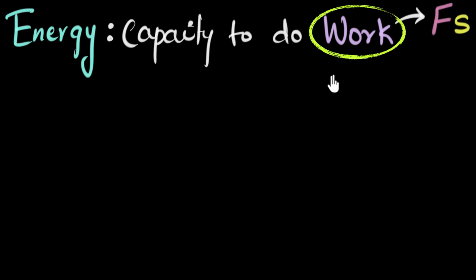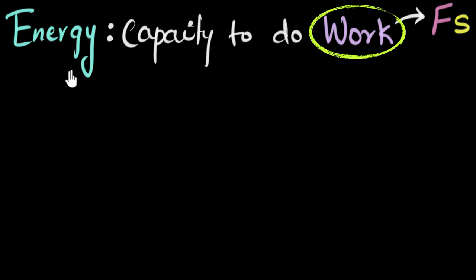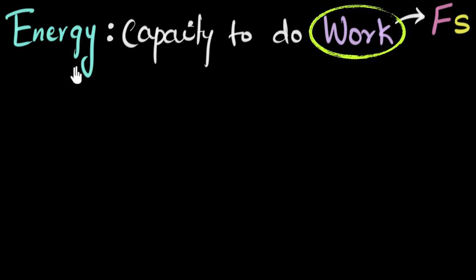In physics, work is the force acting on an object multiplied by the displacement of that object. This means to do work, you need to push on something and make it move. So this statement is basically saying that anything that can do work has something called energy. If you can do work, you have energy — that's the basic idea. Anything that can push an object and make it move must have energy.